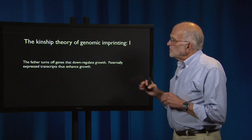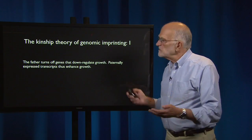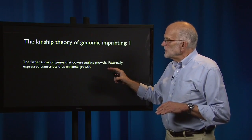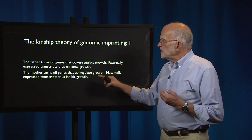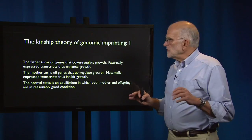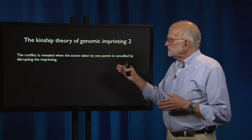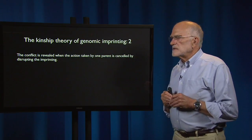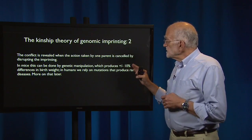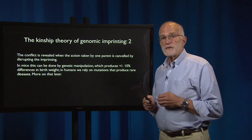To develop that idea in more detail: the father is turning off genes that downregulate growth, so paternally expressed transcripts enhance growth. There's an interesting double negative here. The mother is turning off genes that upregulate growth, so maternally expressed transcripts inhibit growth. The normal state of the embryo is an equilibrium in which both mother and offspring are in reasonably good condition. However, the conflict is revealed when the action taken by one parent is canceled by disrupting the imprinting. In mice this can be done with a genetic manipulation, producing an increase or decrease of about 10% in birth weight. In humans, we rely on mutations that produce rare diseases — we'll talk more about that later.